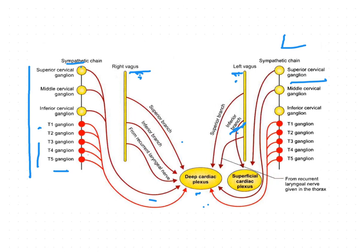On the right side, branches from the right vagus — superior, inferior, and recurrent laryngeal nerve — also form the deep cardiac plexus. On the left side, the middle cervical ganglion, inferior cervical ganglion, upper thoracic ganglia (T1–T5), and all branches of the left vagus except the inferior branch form the deep cardiac plexus.